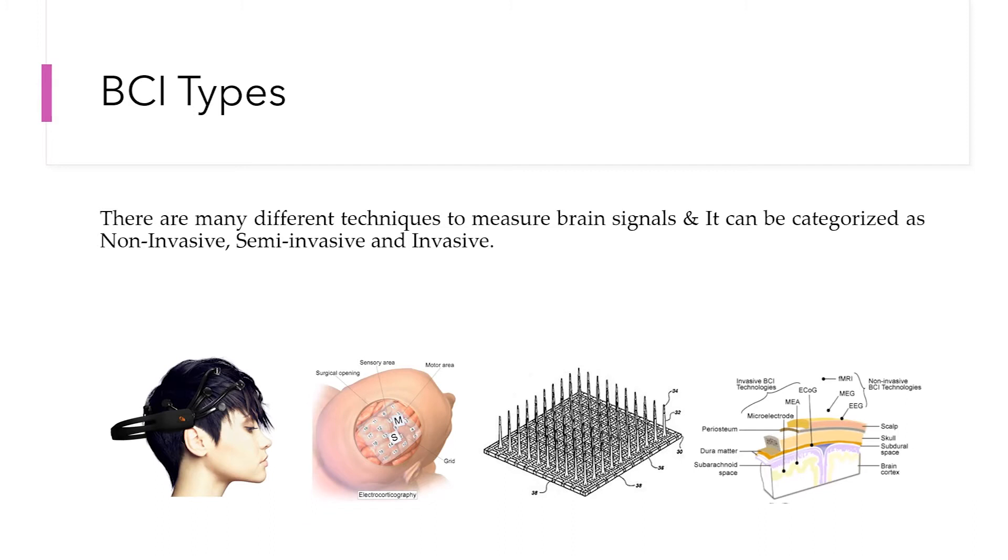In order to access the neurotransmitter signals, we need to capture them. We need devices which are capable of reading brain waves. There are three types of methods which we can use to capture brain signals. First, non-invasive—we can capture brain signals with the help of a wearable physical device, for example, Emotive.